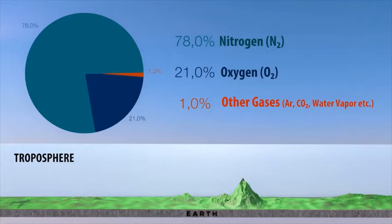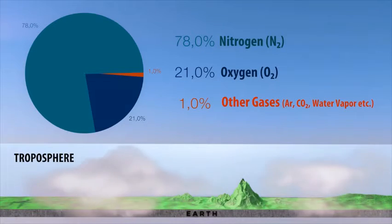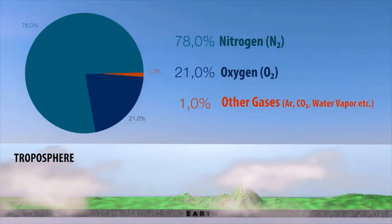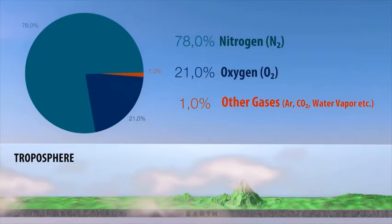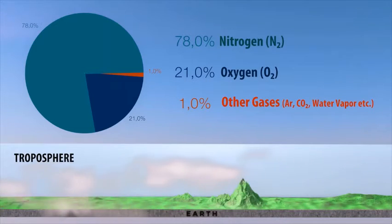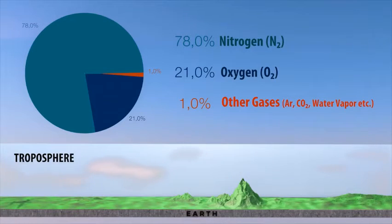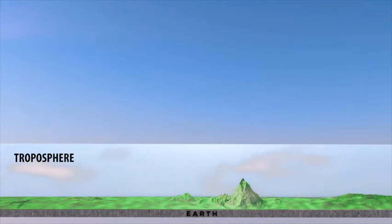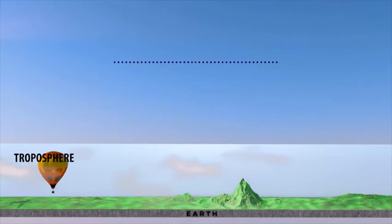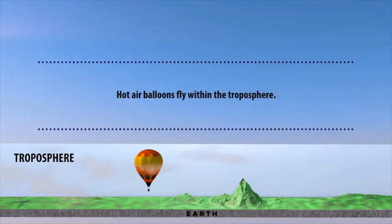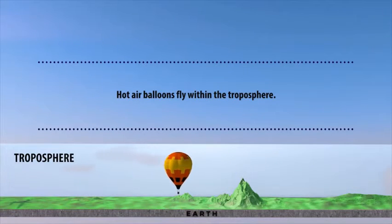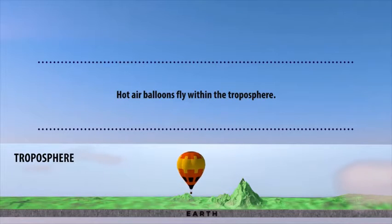The troposphere is composed of nitrogen, oxygen, and other types of gases including water vapor. It is also the layer of the atmosphere where hot air balloons fly.